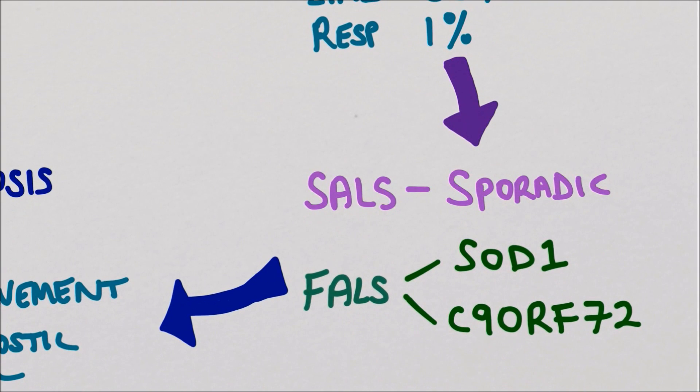The majority of cases are sporadic, but there is also a strong genetic component with the SOD1 and C9ORF72 genes being implicated in familial amyotrophic lateral sclerosis.